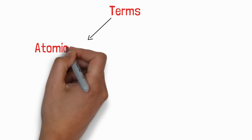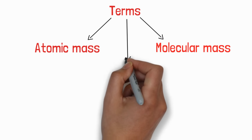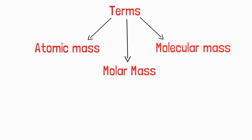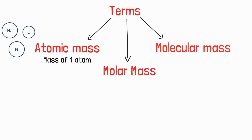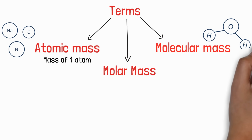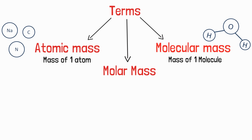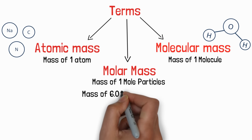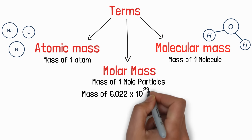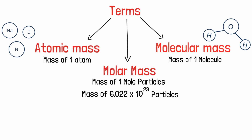Let's start our discussion with simplified definitions of these three terms: Atomic mass, Molecular mass, and Molar mass. Atomic mass is the mass of one atom — the mass of a single atom. Molecular mass is the mass of a single molecule. Molar mass is the mass of one mole — that is, the mass of 6.022 × 10²³ particles. That's what makes it different from atomic and molecular mass.